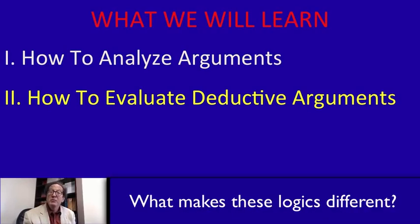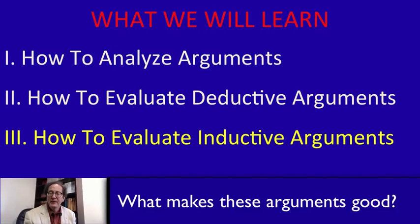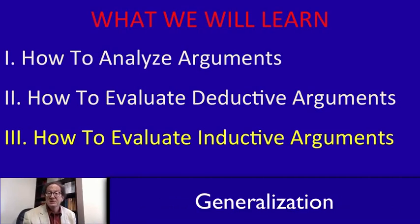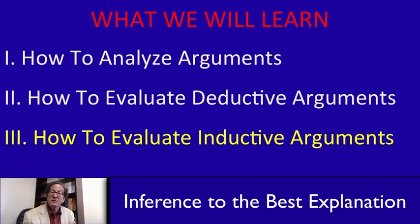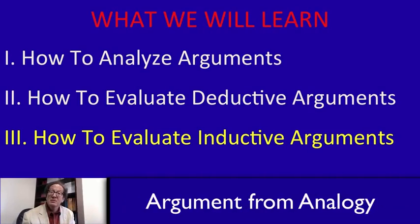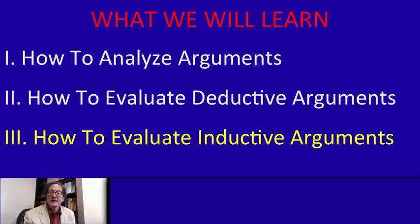Then in part three, we'll look at a different kind of argument: inductive arguments that don't even try to be deductively valid. There are just a lot of different kinds. So we'll look at statistical generalizations, applying generalizations down to particular cases, inference to the best explanation, and arguments from analogy. We'll also look at causal reasoning, probability, and decision making. So there'll be a lot of different types of inductive arguments covered in part three.